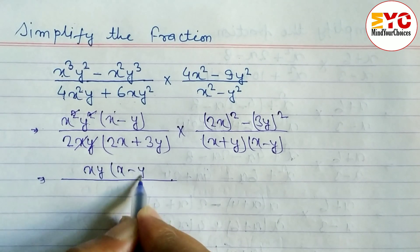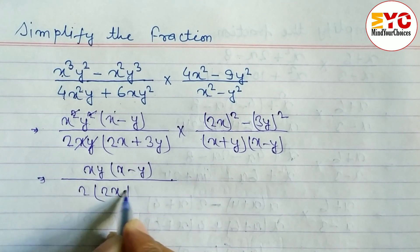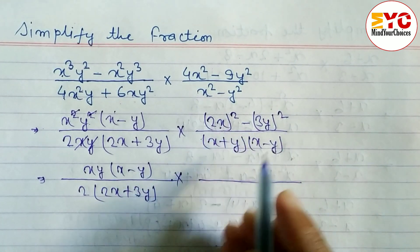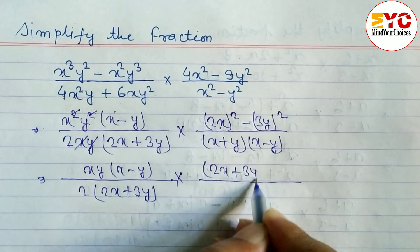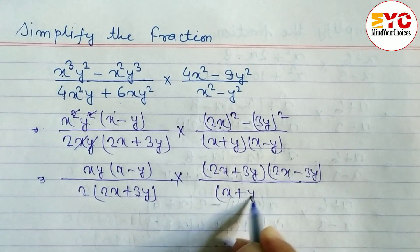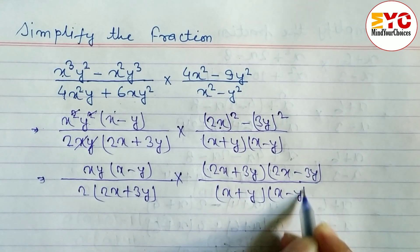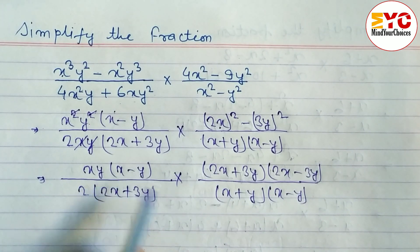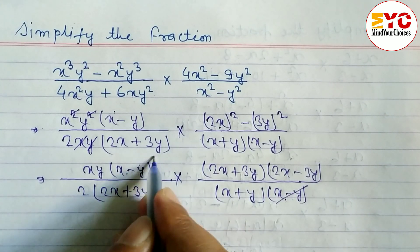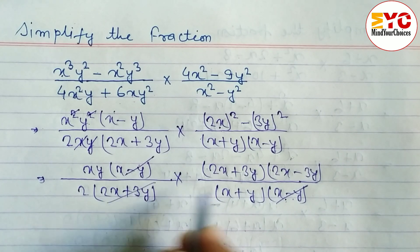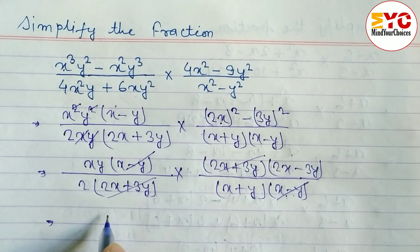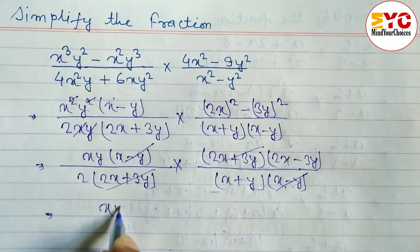Now write down what is remaining: x y, then x minus y, and here 2x plus 3y. Similarly we apply the formula of a square minus b square, giving 2x plus 3y and 2x minus 3y. In the denominator we write x plus y and x minus y. Now we can see in numerator and denominator: x minus y cancels, and 2x plus 3y cancels.